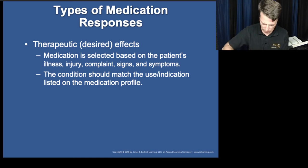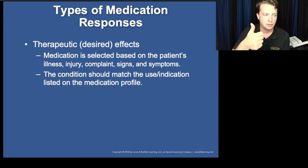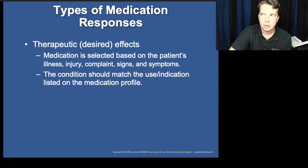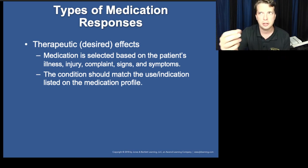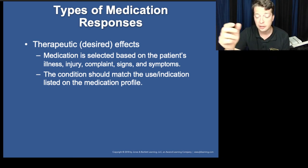What this is talking about is how we're going to have various types of medication responses due to the type of medication used. We select our medication based on the patient's condition. For example, some of us have the opportunity to use both Zofran or Phenergan. Phenergan is a more traditional medication — it's been around a really long time.